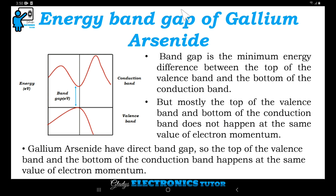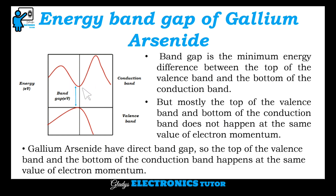Next is the energy band gap of gallium arsenide. Band gap is the minimum energy difference between the top of the valence band and the bottom of the conduction band. But mostly the top of the valence band and the bottom of the conduction band do not happen at the same value of electron momentum. But gallium arsenide has a direct band gap, so the top of the valence band and the bottom of the conduction band happen at the same value of electron momentum.